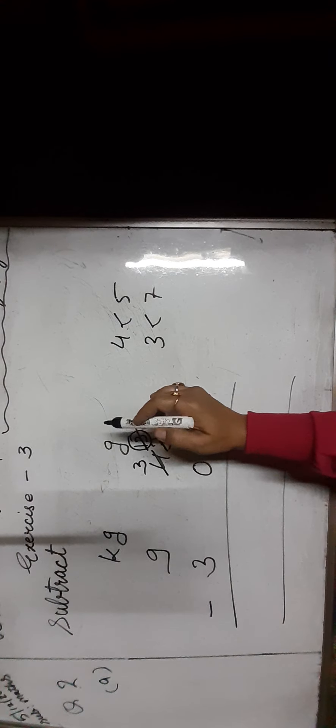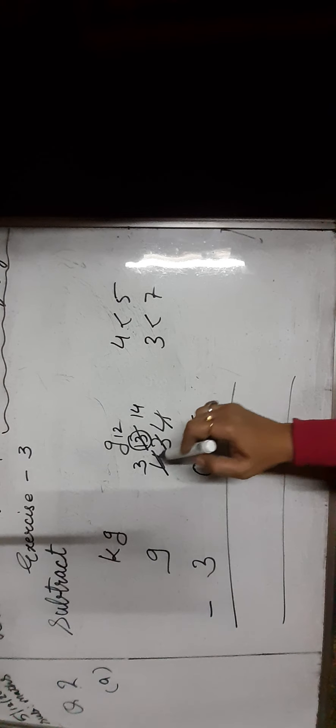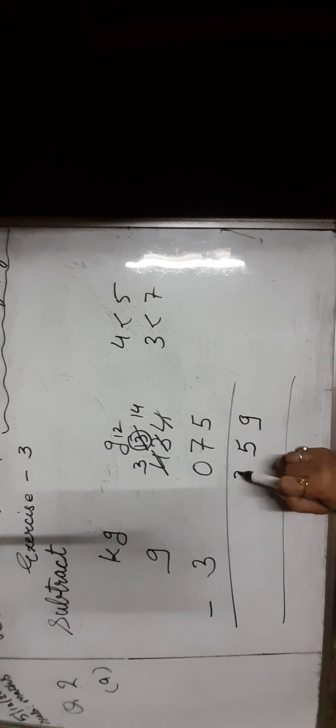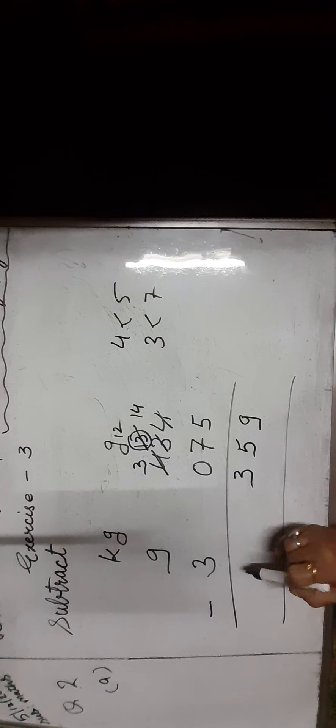Borrow 1 gram to make 14 and 13 becomes 12. Now 14 minus 5 is equal to 9 — write that in the 1's place. Then 12 minus 7 is equal to 5. Now 3 minus 0 is equal to 3. Subtract 3 from 9: 9 minus 3 is equal to 6. Thus, the answer will be 6 kilogram 359 grams.